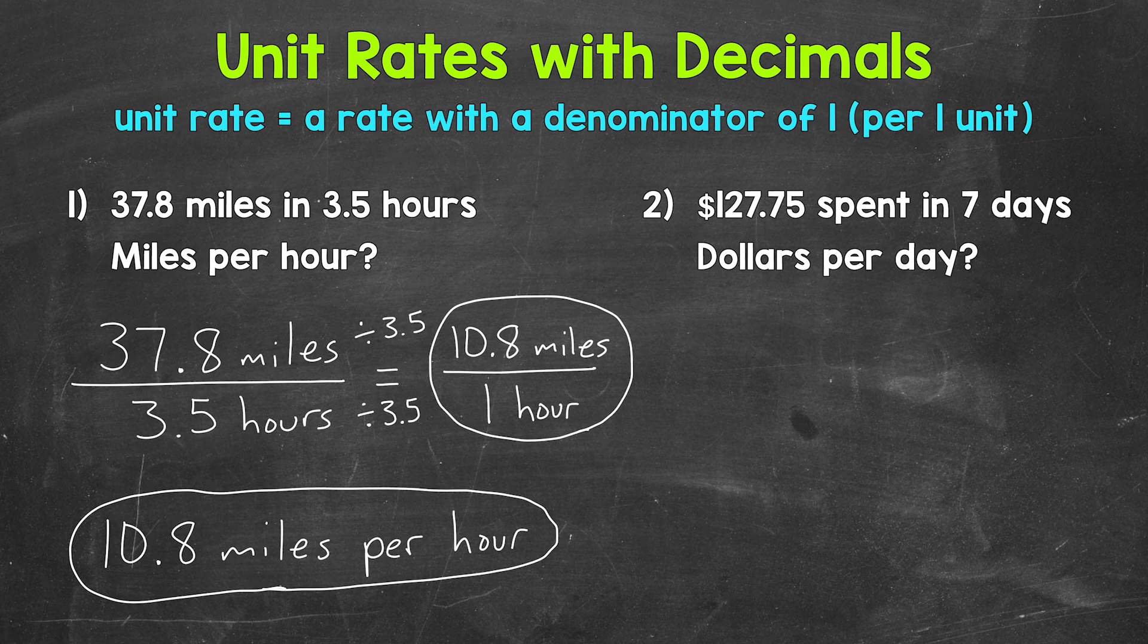Let's move on to number 2, where we have $127.75 spent in 7 days. We need to figure out the number of dollars spent per day. Let's write this rate in fractional form. And again, order matters. We need dollars per day, so dollars and then days. So we start with $127.75 in 7 days.